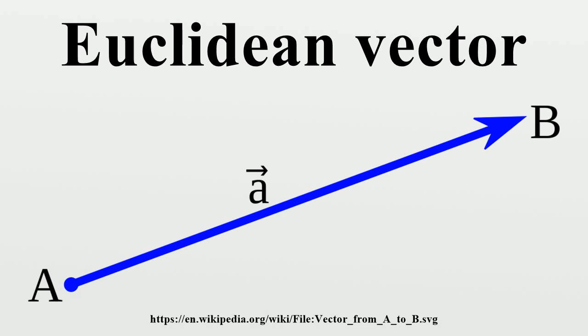Decomposition. As explained above a vector is often described by a set of vector components that add up to form the given vector. Typically, these components are the projections of the vector on a set of mutually perpendicular reference axes. The vector is said to be decomposed or resolved with respect to that set. However, the decomposition of a vector into components is not unique, because it depends on the choice of the axes on which the vector is projected.